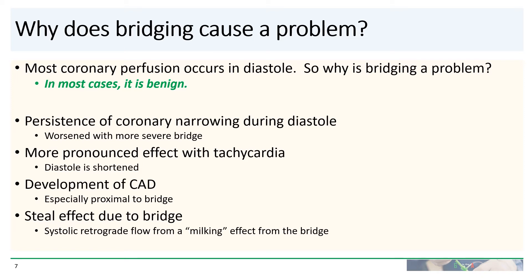A milking effect from severe bridges can sometimes result in retrograde — backward — flow during systole. That can cause a coronary steal phenomenon from downstream coronary branches, which can become more and more prominent as the downstream branches get stiffer with age.